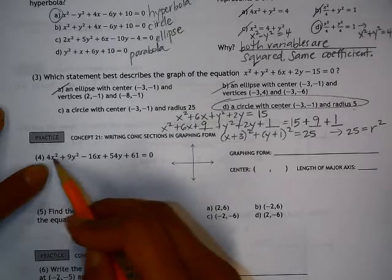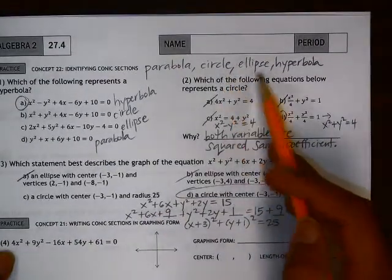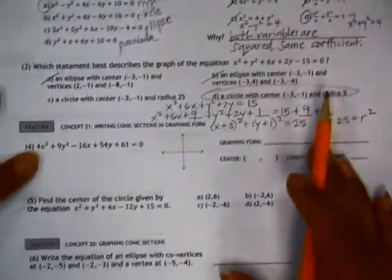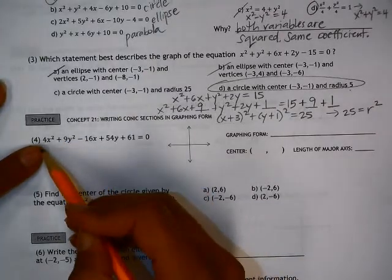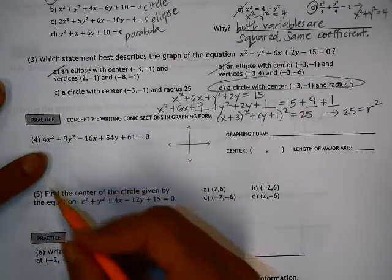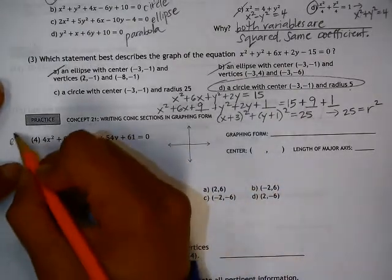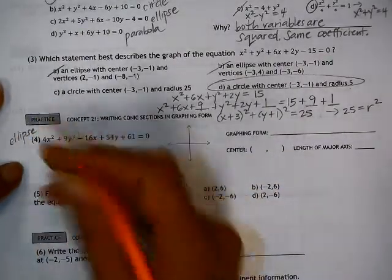We have both variables squared, so it's either a circle, ellipse, or a hyperbola. And we have different coefficients, both positive, so this is an ellipse. So we're trying to get the equation of this ellipse in graphing form.